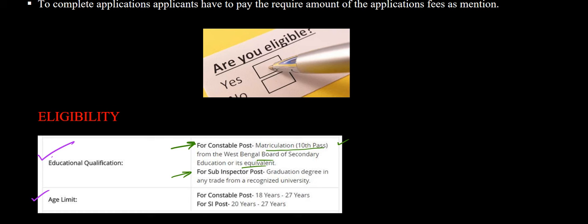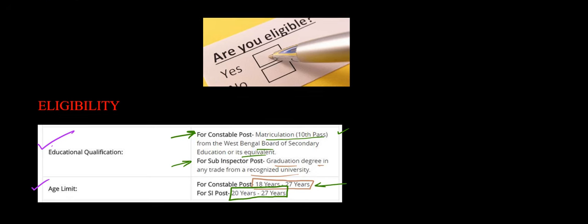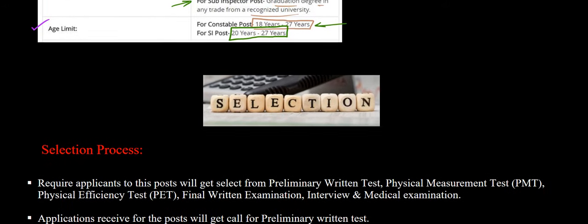For the sub-inspector post, a graduation degree from any recognized university is required. Regarding age limit: for the constable post the age limit is between 18 years to 27 years, and for the sub-inspector post the age limit is from 20 years to 27 years.